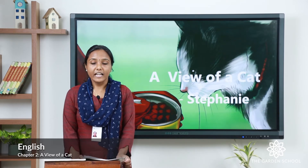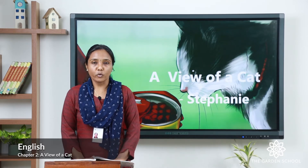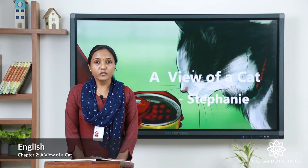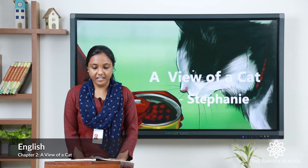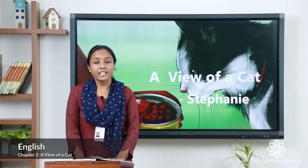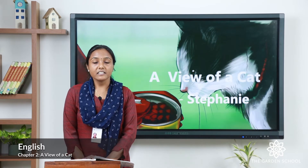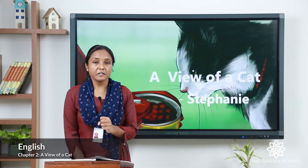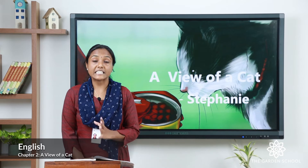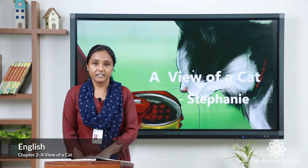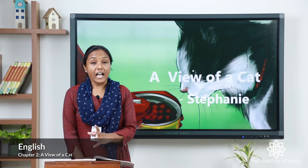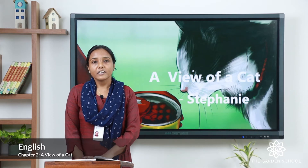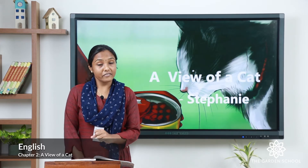Now let's look into the poem. The poem name is 'A View of a Cat.' This is a funny poem about a cat, written by the poet named Stephanie. So before starting, shall I ask you one thing?